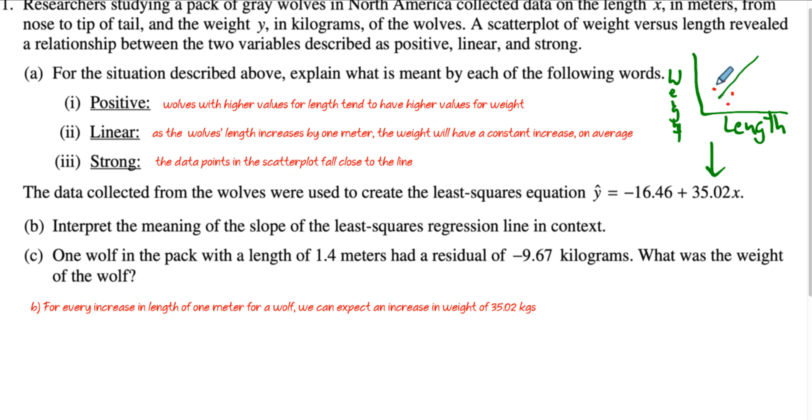And really, that's a boring scatter plot. But scatter plots kind of look like this. You got points all over the place. And so it says the wolf in the pack has a length of 1.4 meters. So as you go over to 1.4, wherever that is, you go up to the line, you have a predicted value of where it should be.